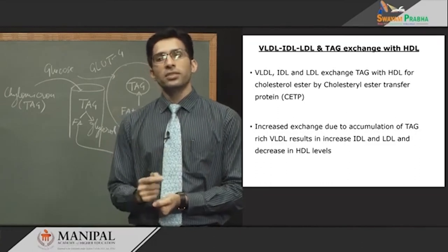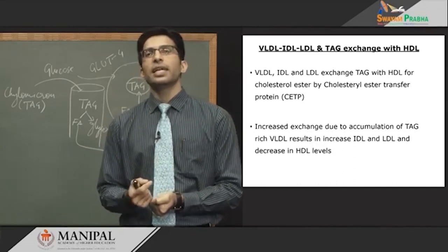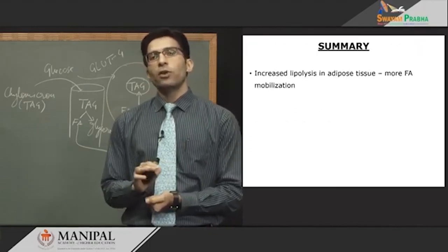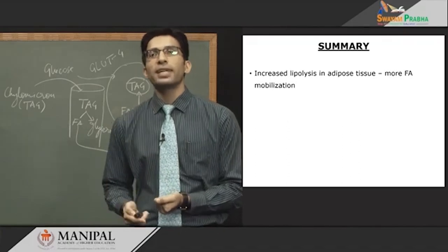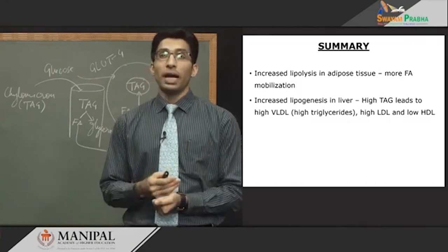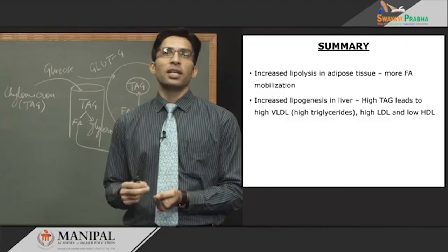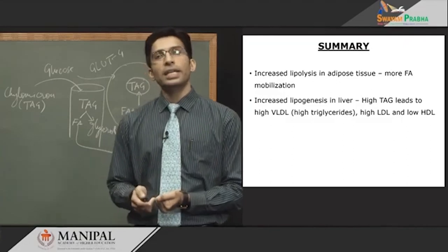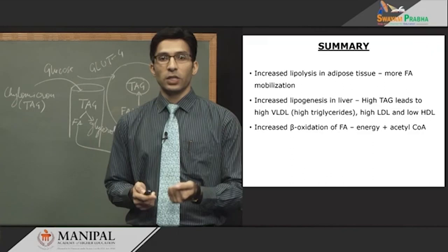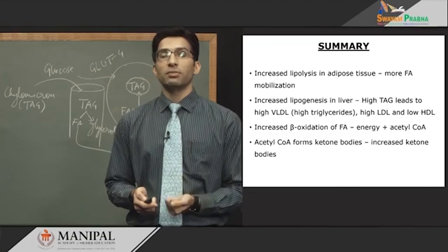In summary: increased lipolysis in adipose tissue means more fatty acid mobilization; increased lipogenesis in the liver means high TAG packed in VLDL, leading to hyper-triacylglycerolemia, high LDL, and low HDL in diabetes mellitus. Increased beta-oxidation of fatty acid gives energy as well as acetyl-CoA, and this acetyl-CoA leads to ketone body formation — increased ketone bodies in diabetes mellitus leading to ketoacidosis.